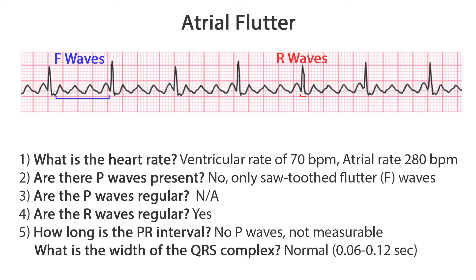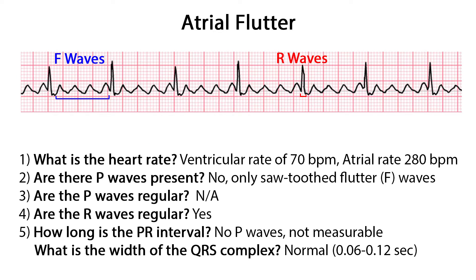Now we'll use the 5-step approach to evaluate atrial flutter. Step 1: What is the heart rate? Counting the R waves, or QRS complexes, in 6 seconds, there are 7 — so 7 times 10 equals a ventricular rate of 70 beats per minute. Step 2: Are there P waves present? No, only sawtoothed flutter or F waves. The atrial rate can be figured out by counting the number of F waves in 6 seconds and multiplying by 10. There are 28 F waves, so the atrial rate is 280 beats per minute.